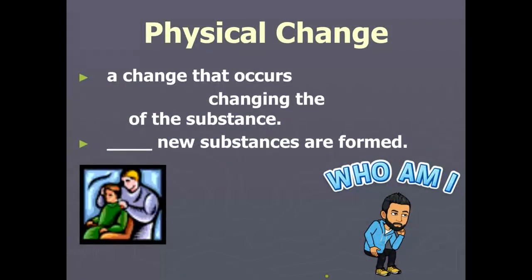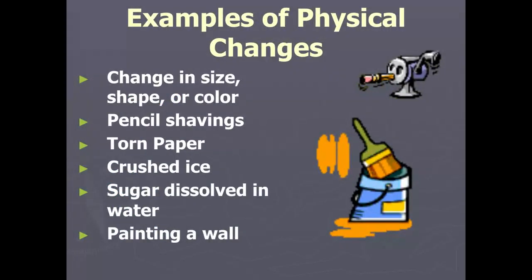So speaking of that, we're going to move on to physical changes. A physical change is a change that occurs without changing the identity of a substance, and there is no new substance formed in a physical change — it does not change what you have. For example, changes in size, shape, or color. Color can be a tricky one, so hold on to that idea.